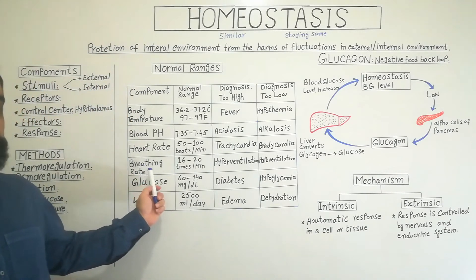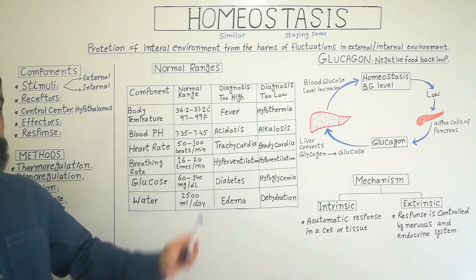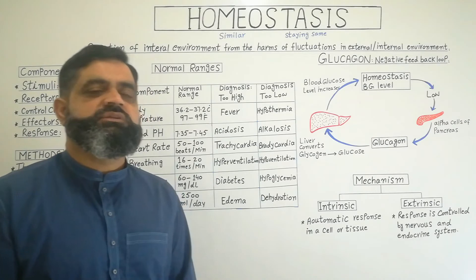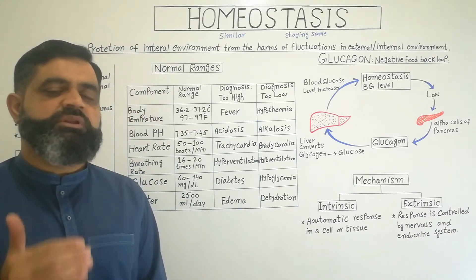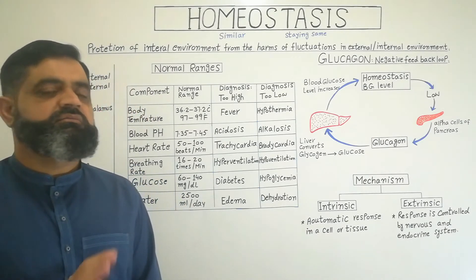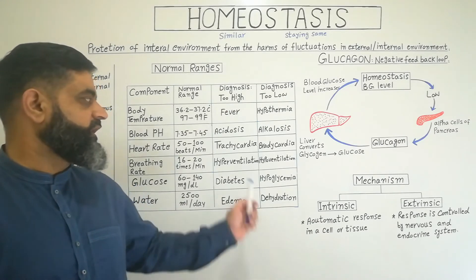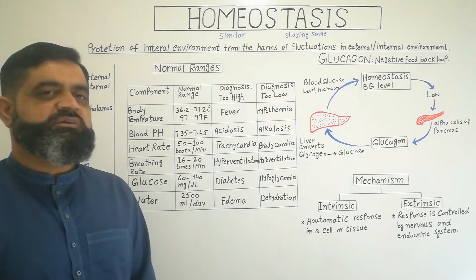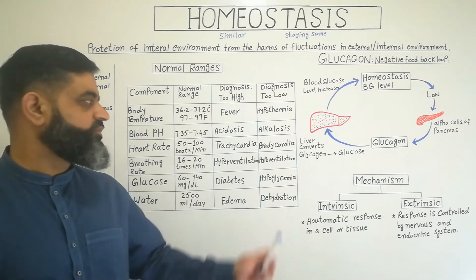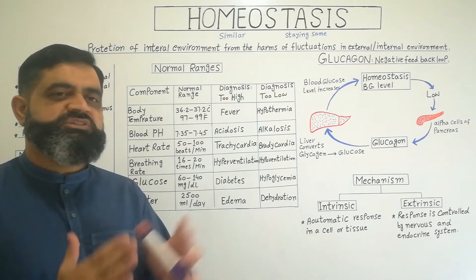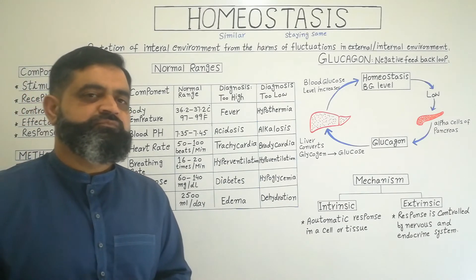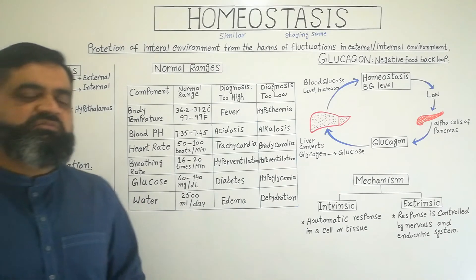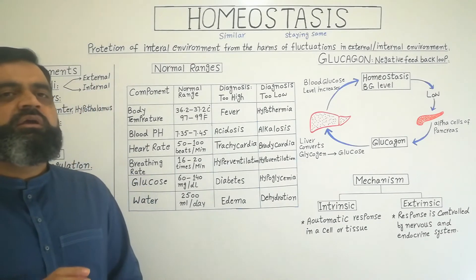Normal breathing rate is 16 to 20 times per minute. During exercise it can increase up to 30 to 40 times per minute, but more than that is not acceptable. An excessively high breathing rate leads to a condition known as hyperventilation. If the breathing rate decreases very low, the condition is hypoventilation. Both conditions can lead to death and require homeostasis.